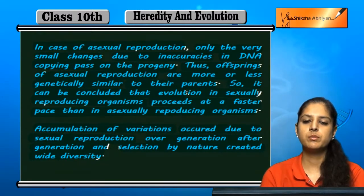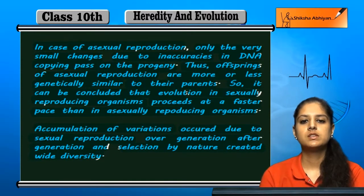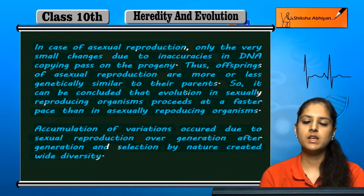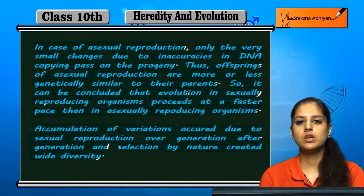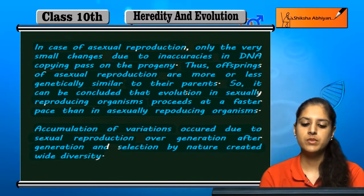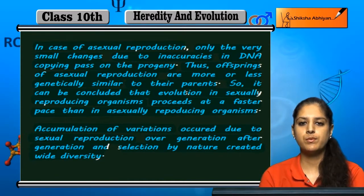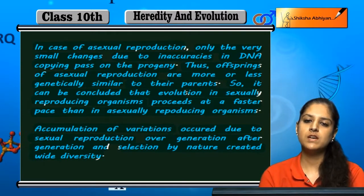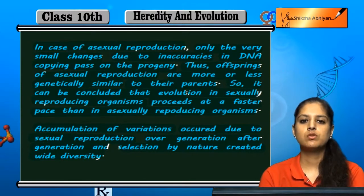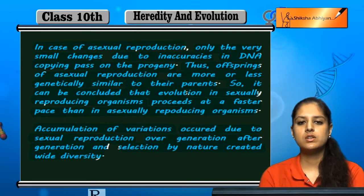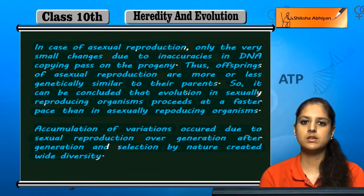In the case of sexual reproduction, the variation is greater because of inaccurate copying of DNA, random segregation, and differences in genetic material copying. In asexual reproduction, everything is accurately and approximately copied, so the progeny is the same, meaning variation is less and organisms evolve slowly. Sexually reproducing organisms, on the other hand, evolve quickly.